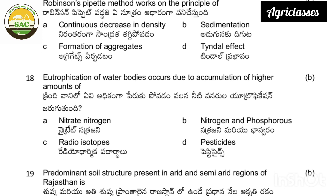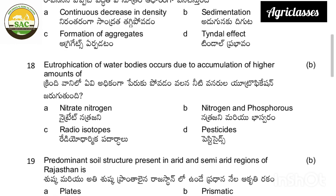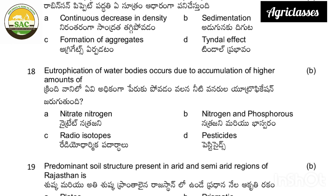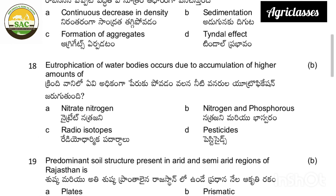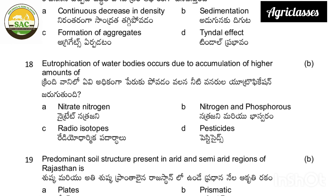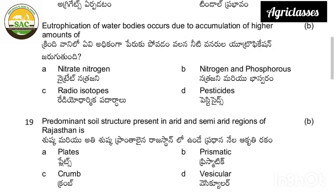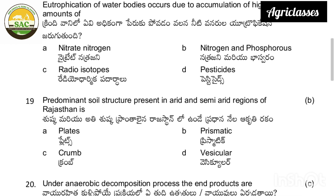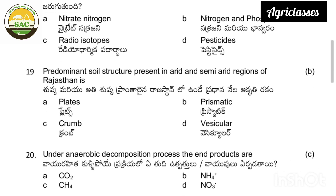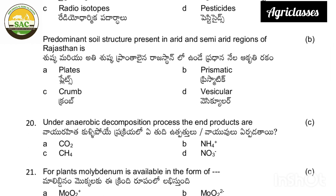The correct answer for Robinson's pet method is sedimentation. Eutrophication of water bodies occurs due to accumulation of higher amounts of — nitrate nitrogen, nitrogen and phosphorus, pesticides, or radioisotopes. The correct answer is nitrogen and phosphorus.